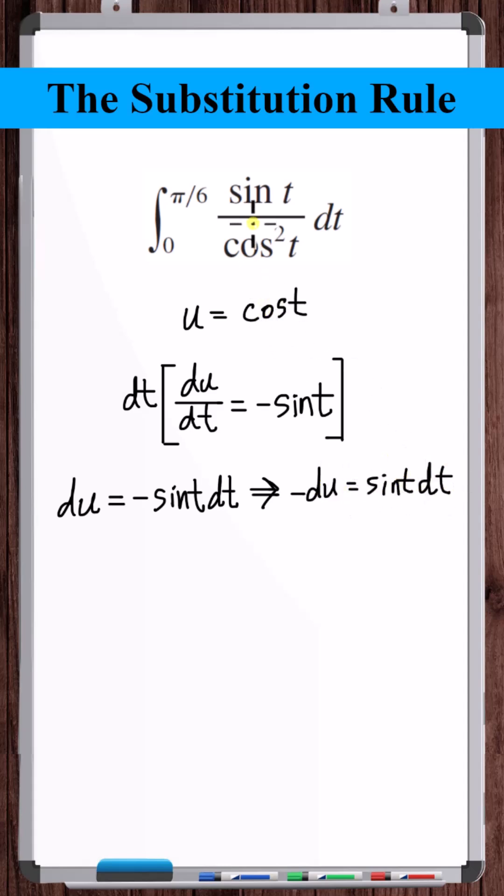So now we can see we can make these substitutions and get rid of all the t variables. Making the substitution, we get 1 over u squared times minus du.